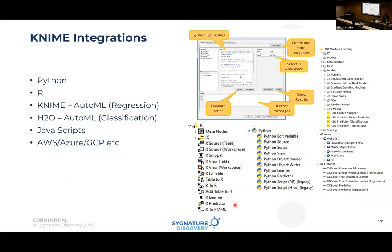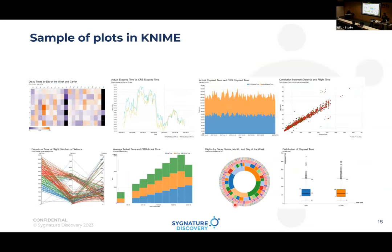For integrations: Python is integrated, R is integrated, and WEKA — the statistical and machine learning package — is also well integrated. KNIME has its own AutoML nodes for regression and classification, and H2O AutoML is available which uses ML-based algorithms for training data. You can also integrate with AWS, Azure, and Google Cloud.